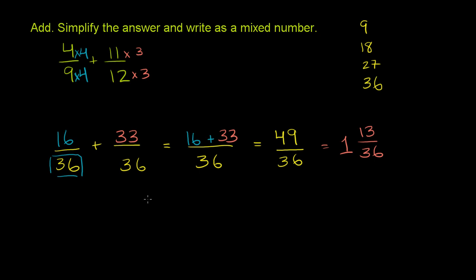And you could do that manually if you like. You take 36 into 49. 36 goes into 49 one time. 1 times 36 is 36. And then you subtract. 9 minus 6 is 3. 4 minus 3 is 1. You have a remainder of 13. So that's our answer: 1 and 13/36.